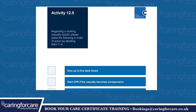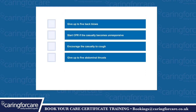Activity 12.5. Regarding a choking casualty adult, please place the following in order of action by labelling them 1 to 4. Give 5 back blows. Start CPR if the casualty becomes unresponsive. Encourage the casualty to cough. Give up to 5 abdominal thrusts. In which order would you do those?